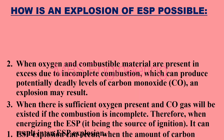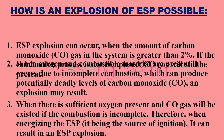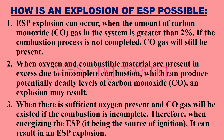Next, we will look at how an ESP explosion happens. Point 1: ESP explosions can occur when the amount of CO gas in the system is greater than 2%. If the combustion process is not completed, CO gas will still be present. Point 2: When oxygen and combustible material are present in excess due to incomplete combustion, potentially deadly levels of CO can lead to an explosion. Point 3: When there is sufficient oxygen and CO gas exists from incomplete combustion, energizing the ESP — being the source of ignition — can result in an explosion.